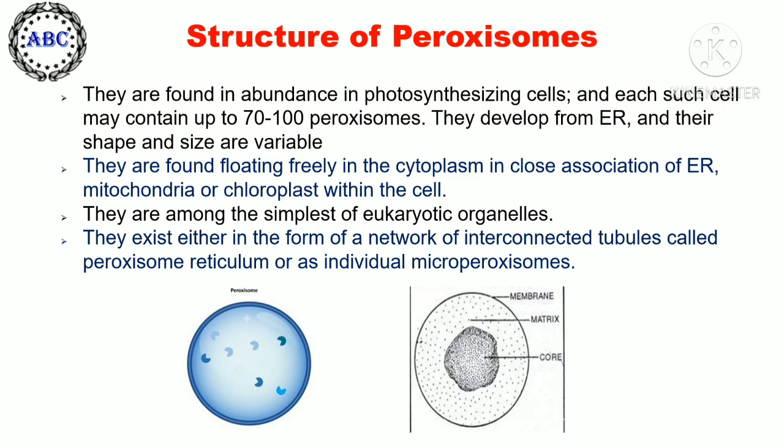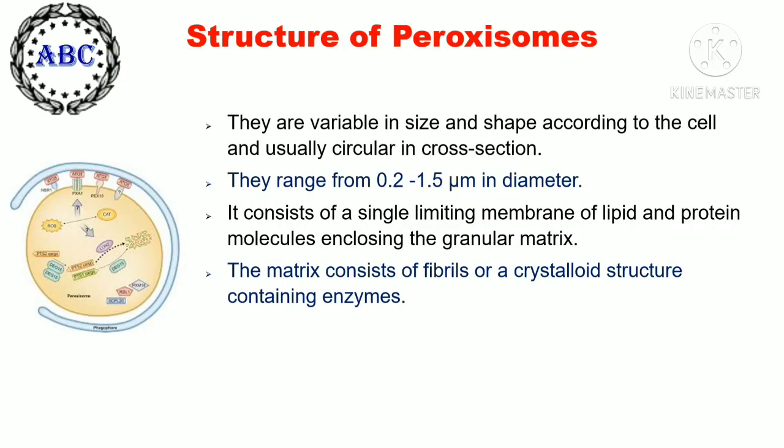They are found floating freely in the cytoplasm, in close association with the endoplasmic reticulum, mitochondria, and chloroplasts. They are among the simplest of eukaryotic organelles, existing either as a network of interconnected tubules called peroxisome reticulum, or as individual micro-peroxisomes. They are variable in size and shape, and usually circular in cross section.